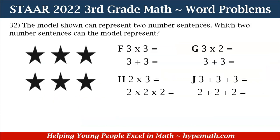Let's look at number 32. The model shown can represent two number sentences. Which two number sentences can the model represent? We see three columns of two squares, a total of six. Our answer choices are: F — three times three, and three plus three; G — three times two, and three plus three; H — two times three, and two times two times two; J — three plus three plus three, and two plus two plus two.